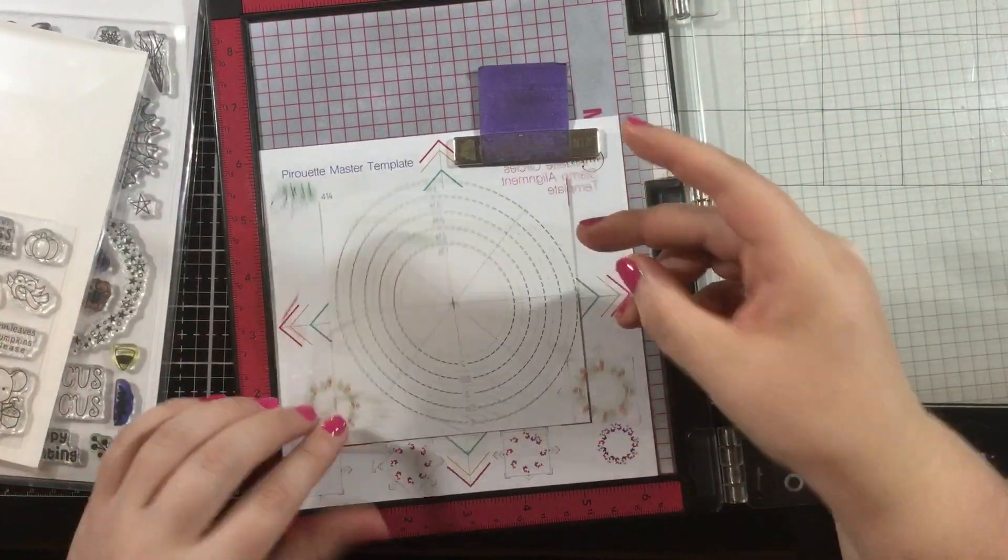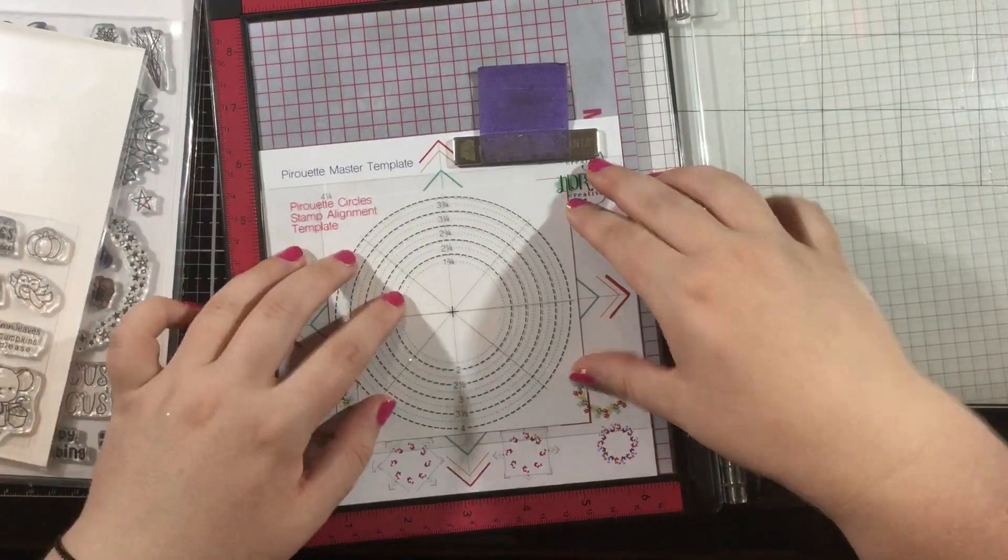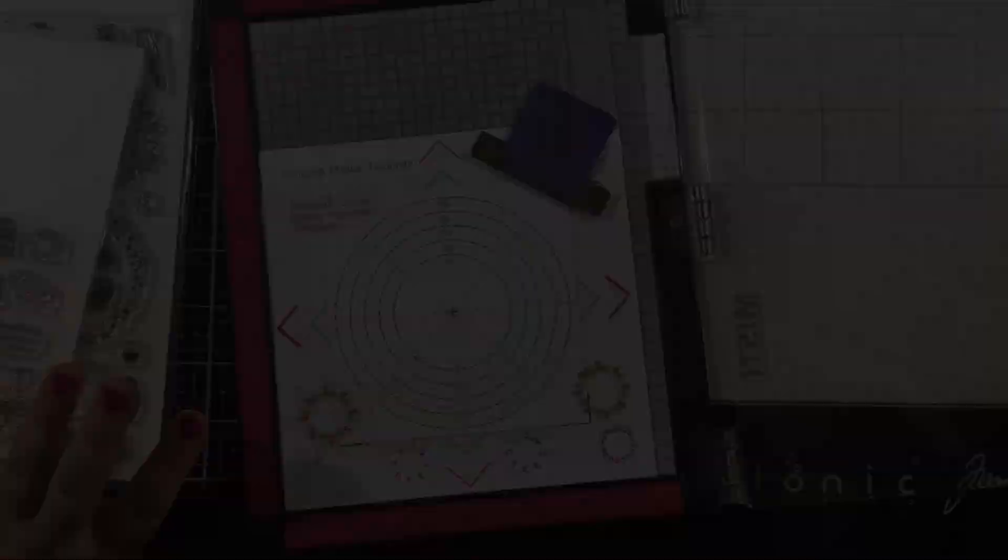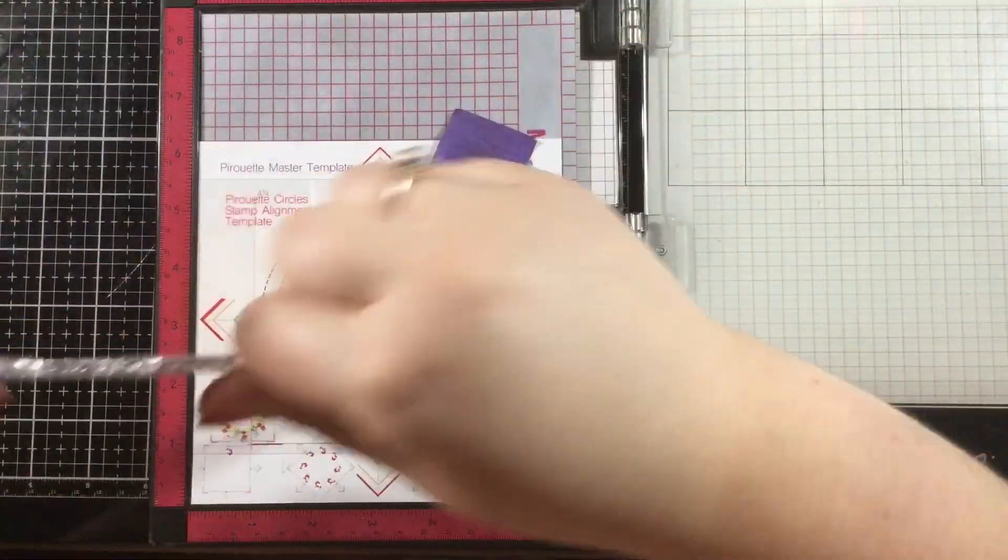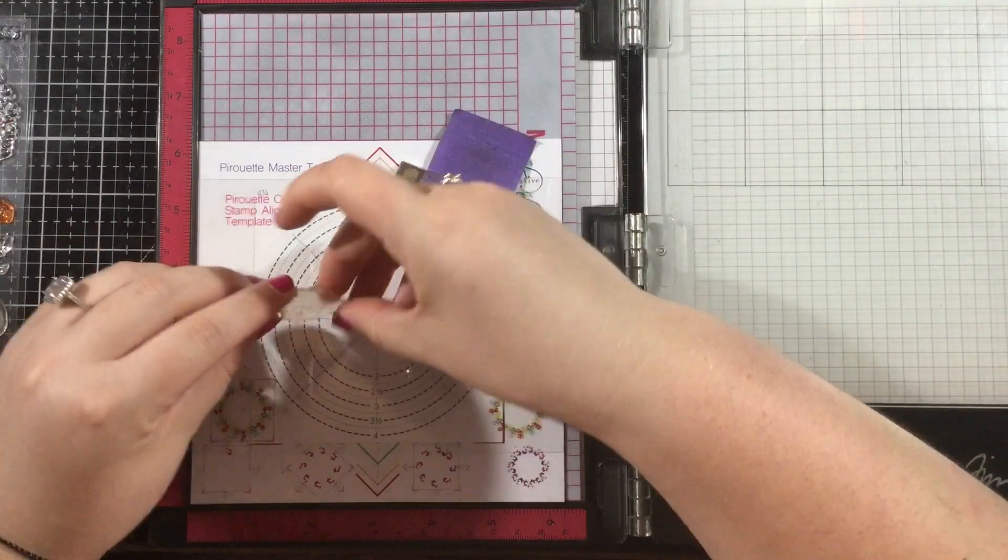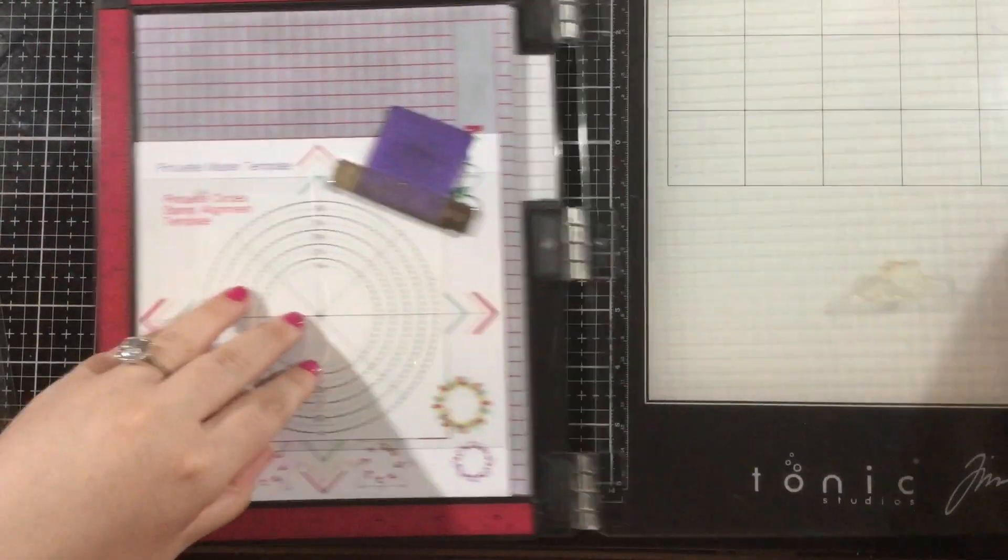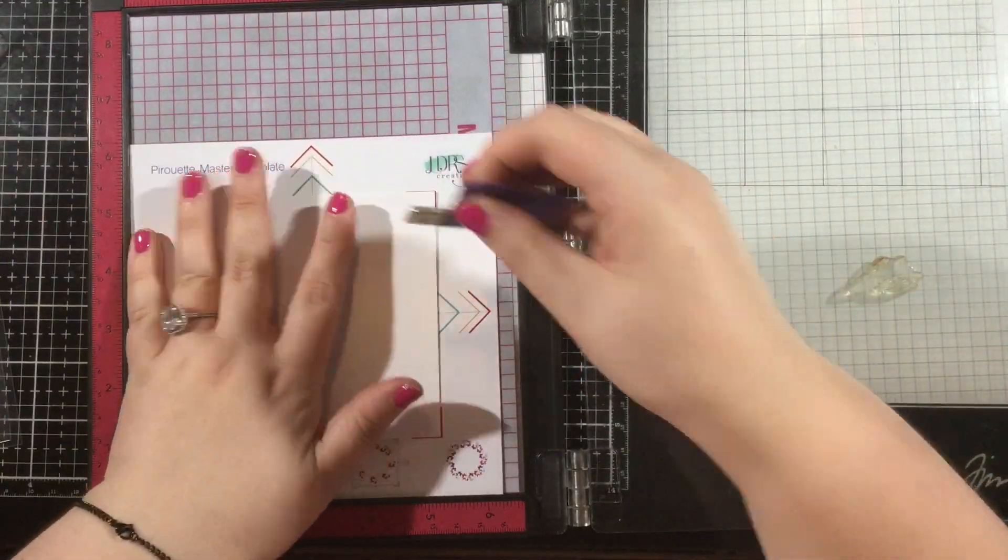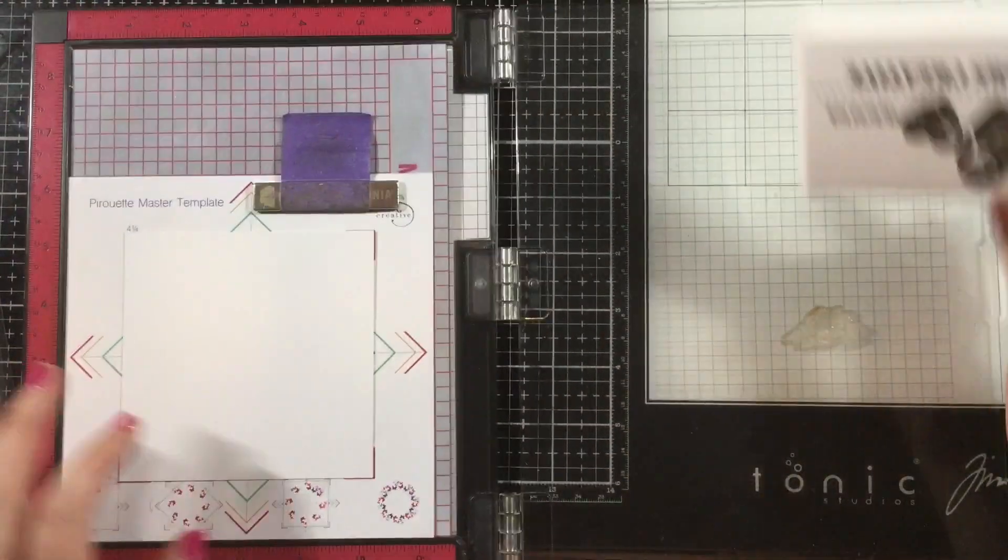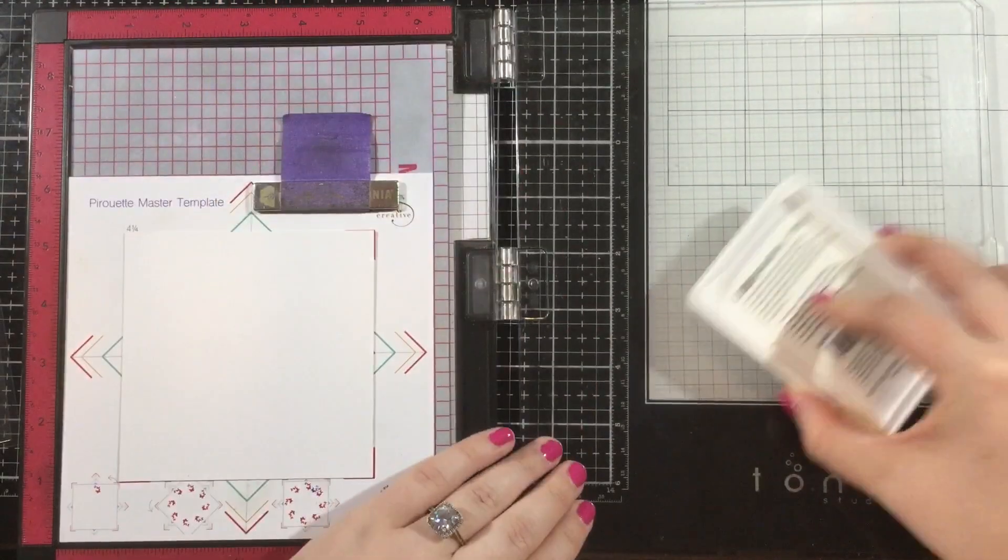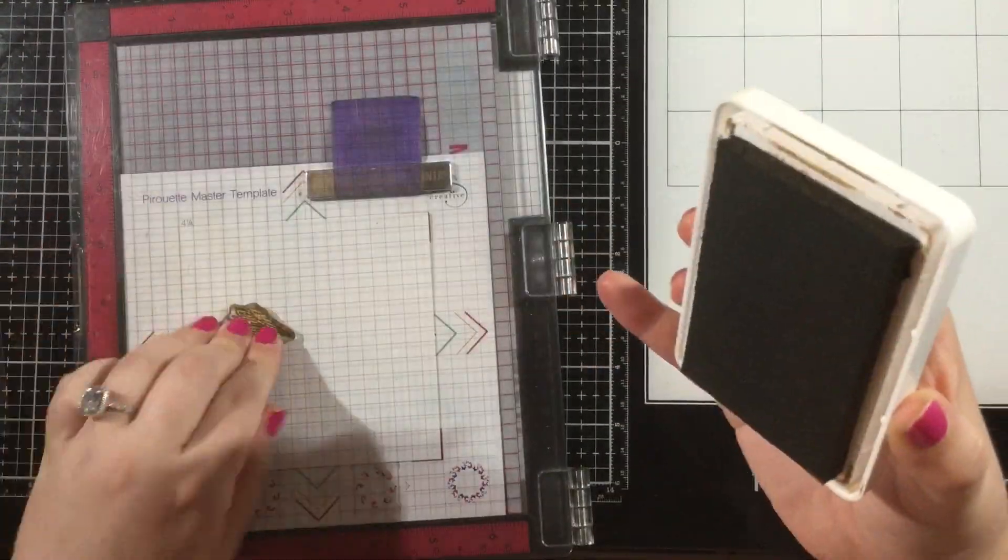So I cut a piece of white cardstock to be four and a quarter by four and a quarter inches square and I'm going to use the pirouette pattern template to position my image. I used some double-sided adhesive and temporarily adhered that white cardstock, lining that up with the four and a quarter inch markings.